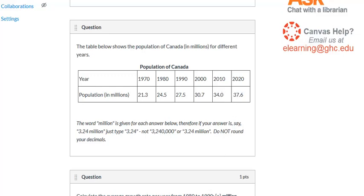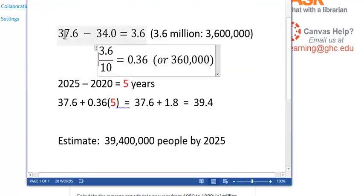Now if you subtract them, you'll find that the increase is 3.6 over the 10 years. So an extra 3.6 million people, or 3,600,000 people, over the 10 years.